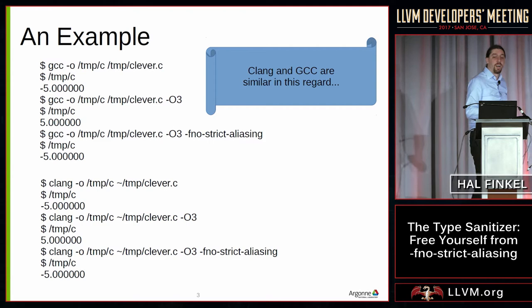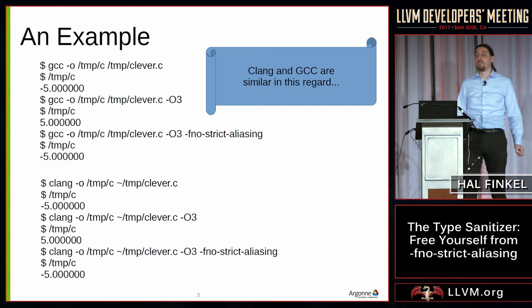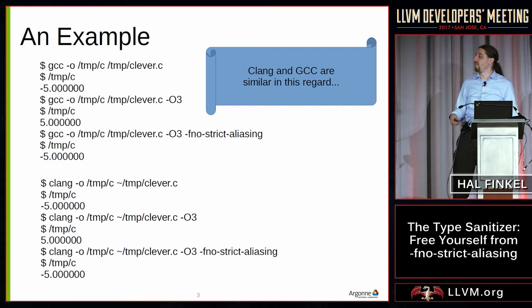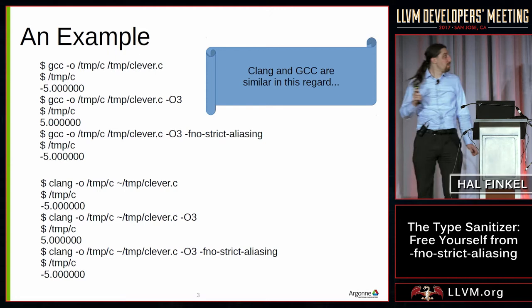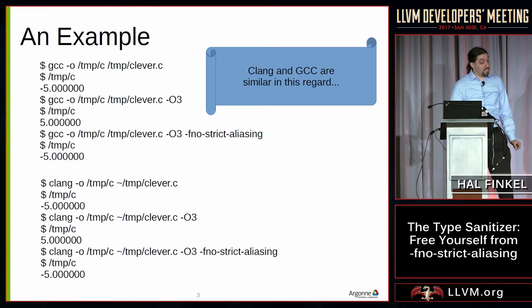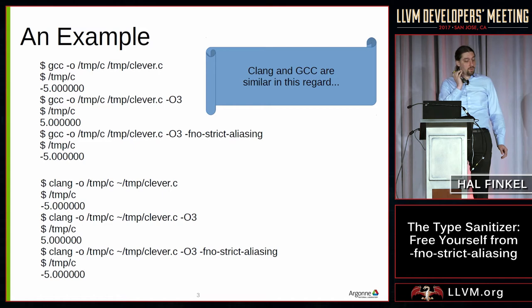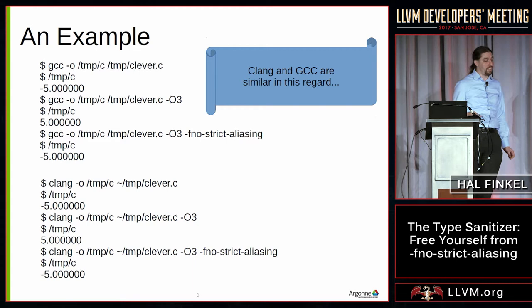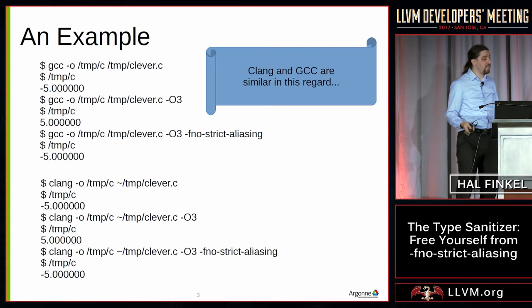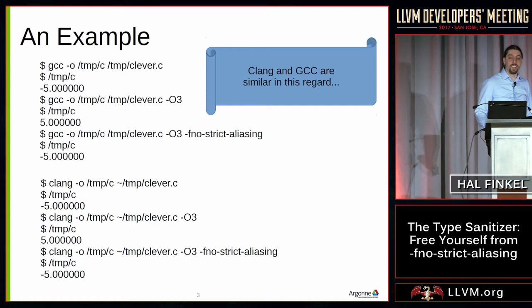The reason I picked this example is that both GCC and Clang behave the same way. If you compile with GCC or Clang without optimizations enabled, it prints negative five as expected. If you compile with optimizations enabled, it prints five. This is true for both Clang and GCC. And with both, if you turn on -fno-strict-aliasing, you get back to printing negative five, as you might expect.